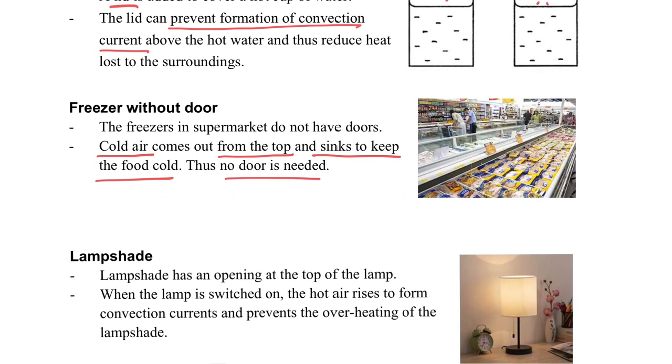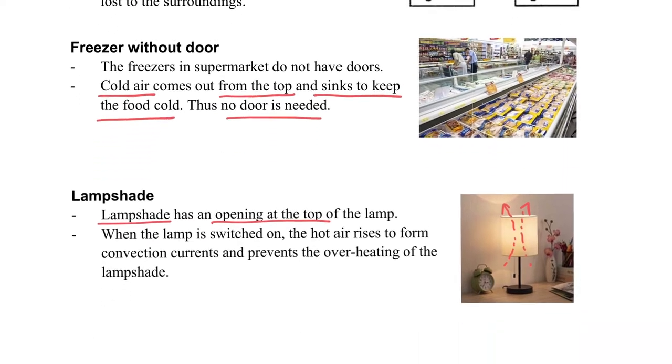Also, the lamp shade. This kind of lamp shape is open at the top and also open at the bottom. Why we do so? Because it can allow the hot air to rise and leave the lamp so that it won't heat up the lamp so much.